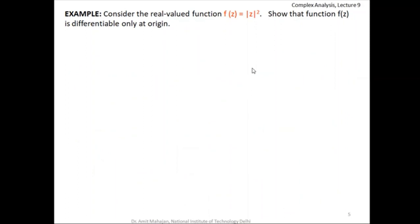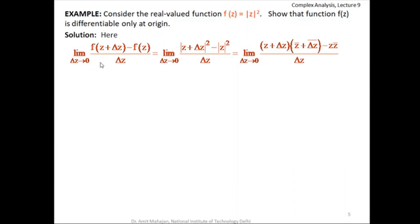Now we'll take one example to show that it is possible for a derivative to exist at certain points but not everywhere. The example is f(z) = |z|². We will show that f(z) is differentiable only at the origin. We'll use the same limit definition: the limit as Δz → 0 of [f(z + Δz) − f(z)] / Δz. Since |z|² = z·z̄, we have f(z + Δz) = |z + Δz|² = (z + Δz)(z̄ + Δz̄).